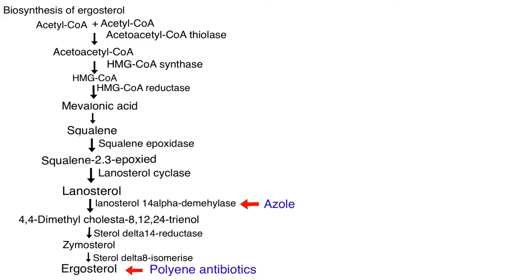Allylamines inhibit ergosterol synthesis by inhibiting squalene epoxidase, the enzyme that catalyzes the conversion of squalene to squalene epoxide, which then leads to lanosterol and ultimately ergosterol. The mechanism of action of tolnaftate is the same as allylamines — it also inhibits ergosterol synthesis by inhibiting squalene epoxidase.